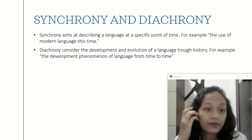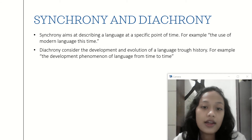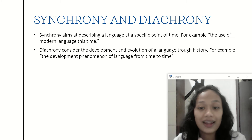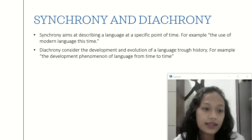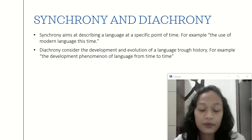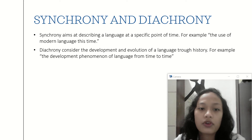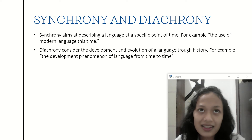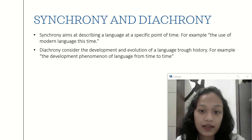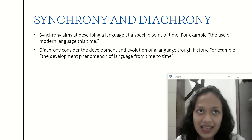And in Diachronic, Diachronic considers the development and evolution of a language through history. For example, the development phenomenon of language from time to time. In Diachronic, we search for the evolution. The key word is evolution. In this case, we will go through history and see the development that happened.